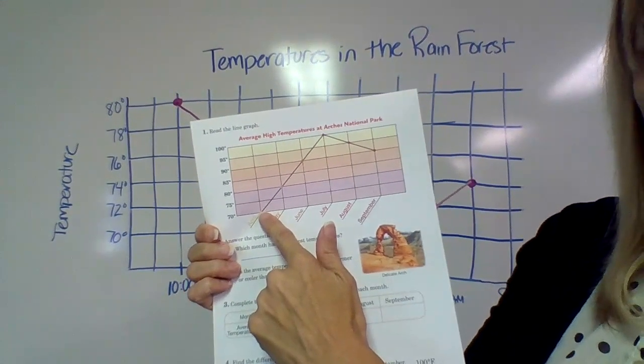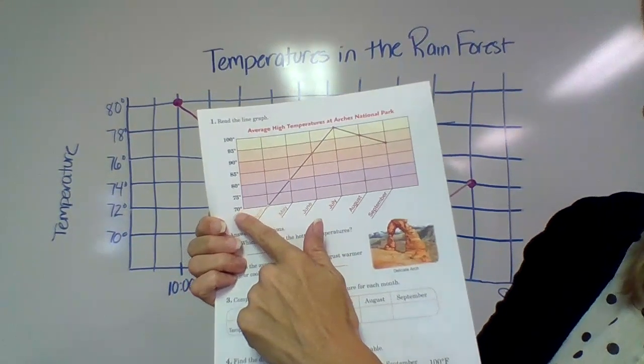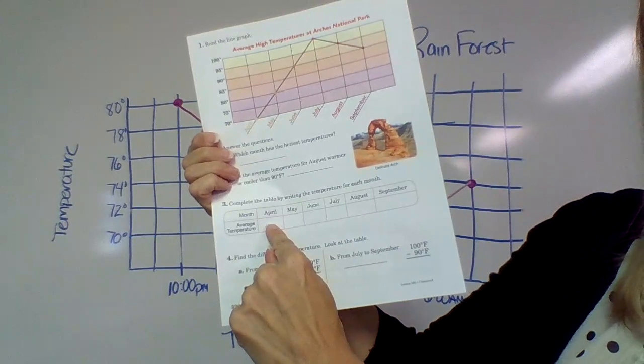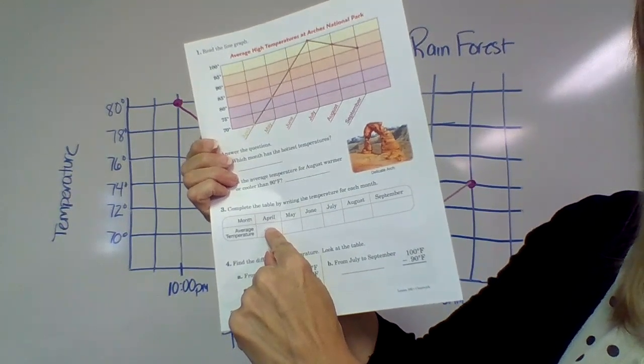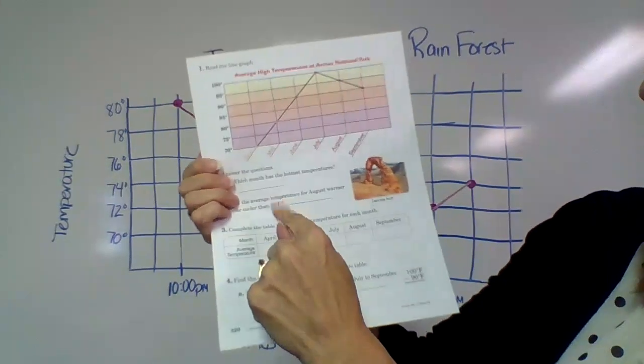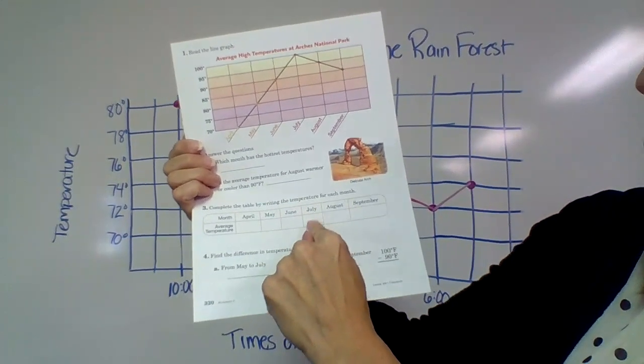April says, let's see, we're going to go to April. April is the first month right there. The dot is at 70 degrees. So right down here in this chart you're going to write 70 degrees. Then you're going to go to May, find where the dot is, write that temperature.